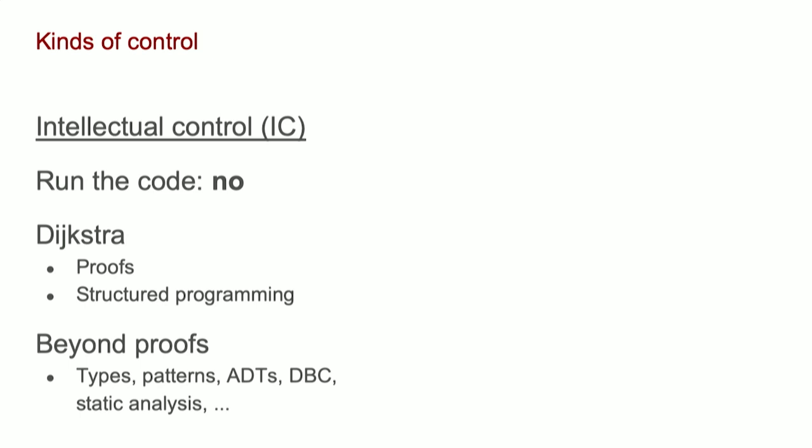Dijkstra was a mathematician by training, and so he held the standard to say we should be proving our code to be correct. Very few of us do that today, although if you are in your IDE and it says this variable might be null and it looks like you're dereferencing it — believe it or not, that's actually the same proof infrastructure demonstrating that that's going on.